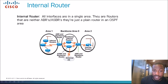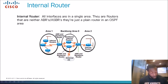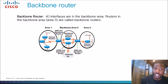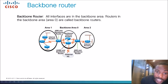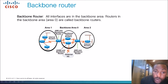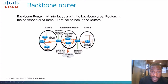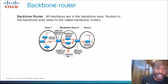Here's another Internal router example. Some routers are also known as Backbone routers because they are in the Backbone area, which brings us to our next type: the Backbone router. A Backbone router has all interfaces in the Backbone area, which is Area 0. Area 0 is also known as the Backbone area, so obviously those routers are called Backbone routers. These two routers in the middle are Backbone routers — each has an interface in Area 0.